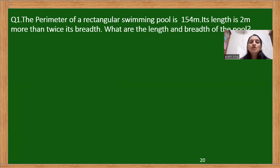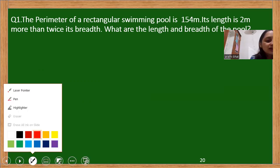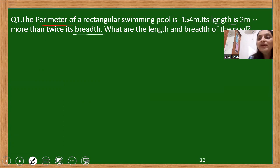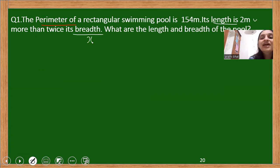Question number one: the perimeter of a rectangular swimming pool is 154 meters. Its length is 2 meters more than twice its breadth. What are the length and breadth of the swimming pool? Basically, the perimeter is given. What is missing — what we need to find out — is the length and breadth. The length is given in terms of breadth: length is 2 meters more than twice its breadth. There is a condition given and we need to build a relationship.